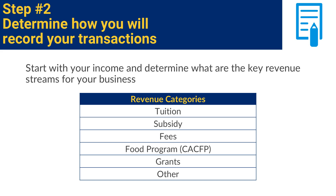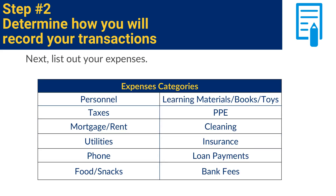You can use this example list to categorize your income sources. Next, list your expenses. This may include items like payroll, cleaning, rent, repairs, supplies, and other categories that match your business. Try to limit the number of categories — you don't need to detail every category that might occur. Focus on the categories you have right now; you can always add more later. With too many categories, the list could become overwhelming, making it difficult to account for spending or revenue. You can use this example list to categorize your expenses.